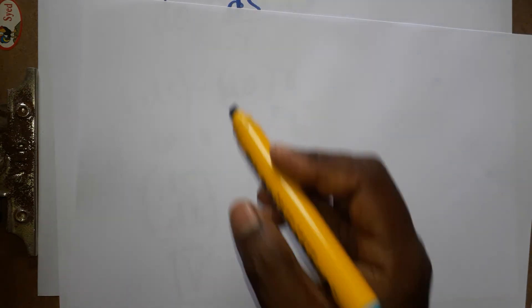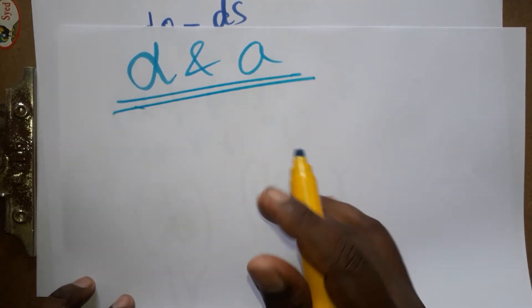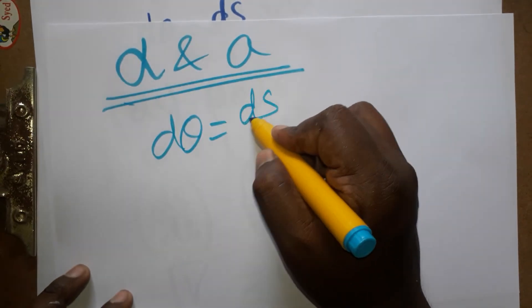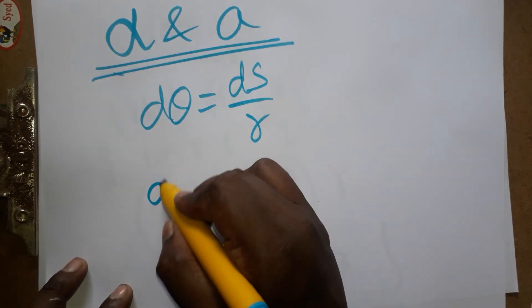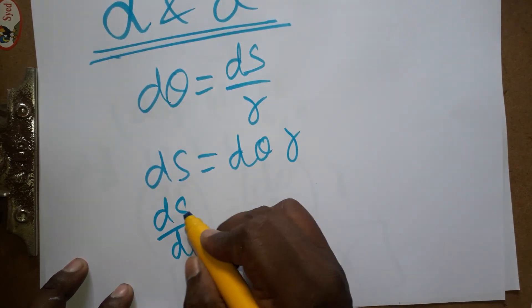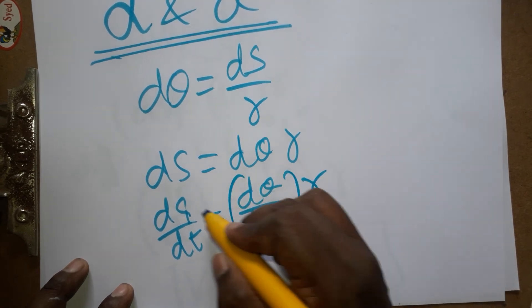Angular acceleration and linear acceleration. dθ = ds/r, so ds = dθ·r. Differentiate this equation: ds/dt = dθ/dt·r. That's going to be - this is v, it is ω, and it is r.